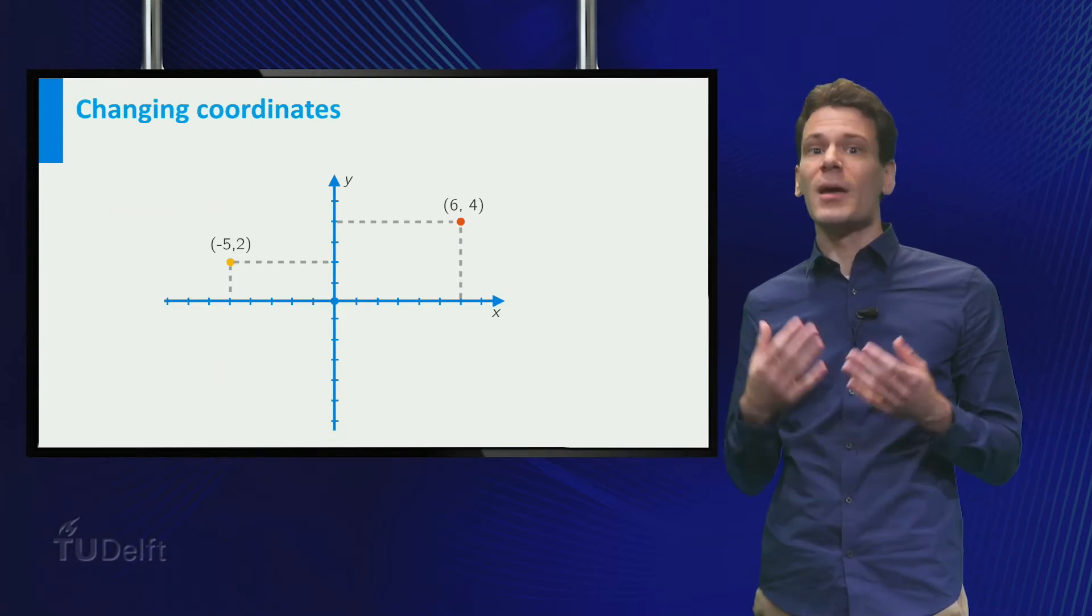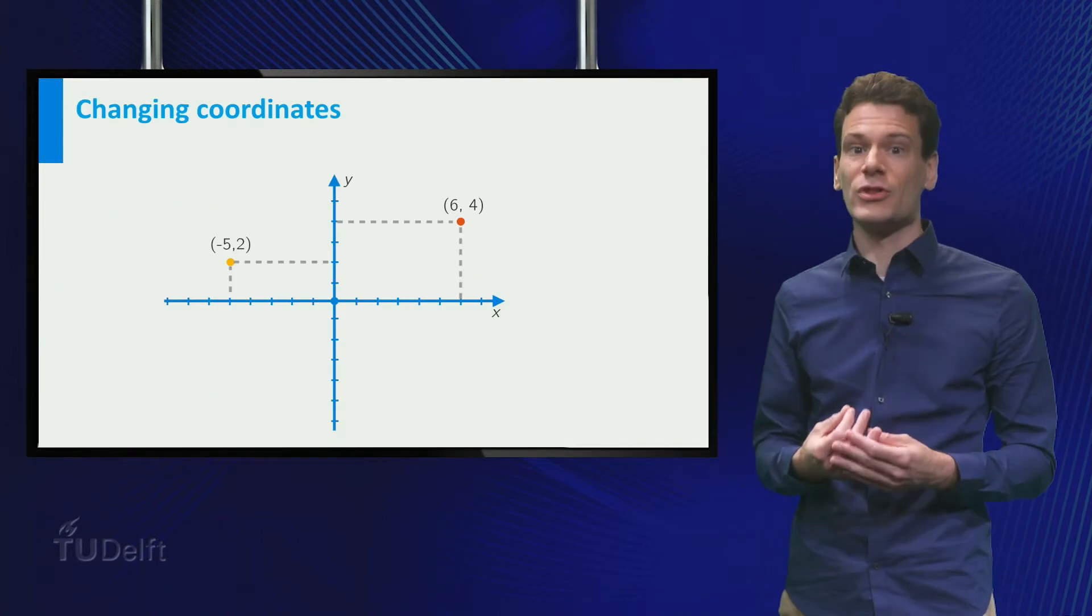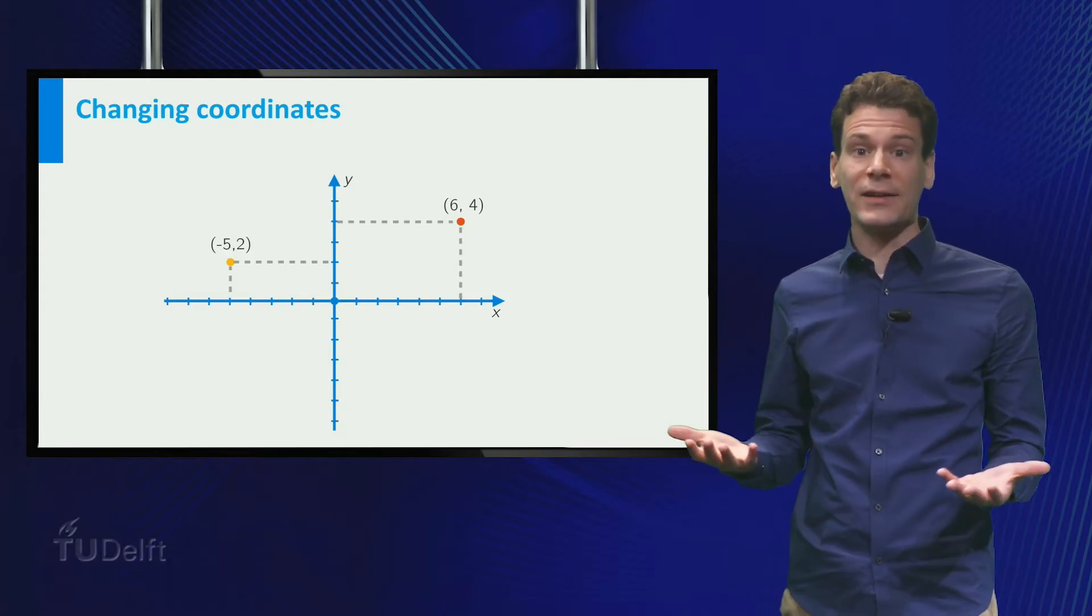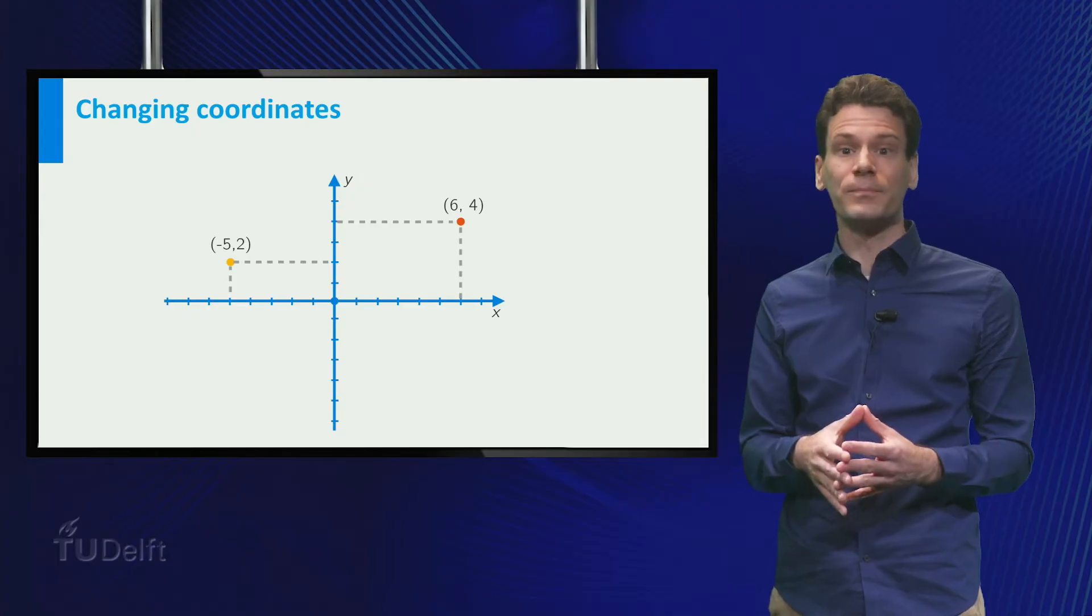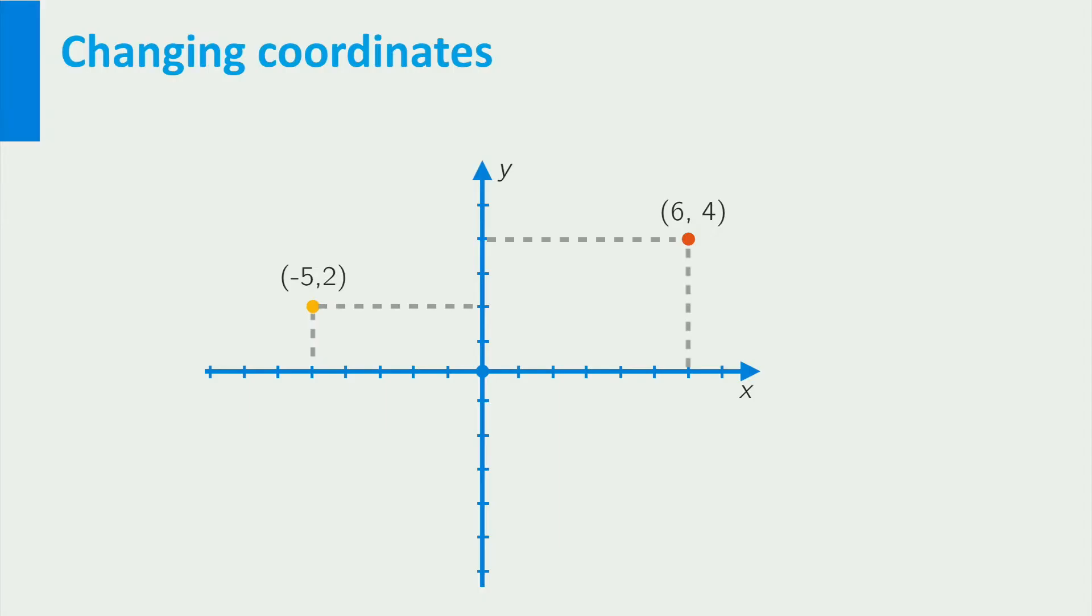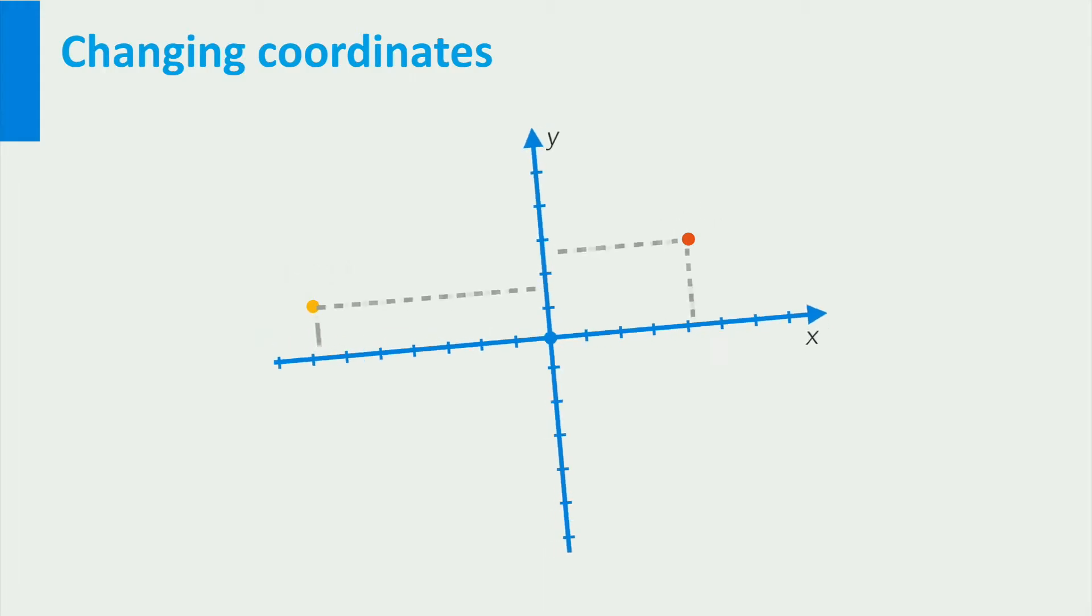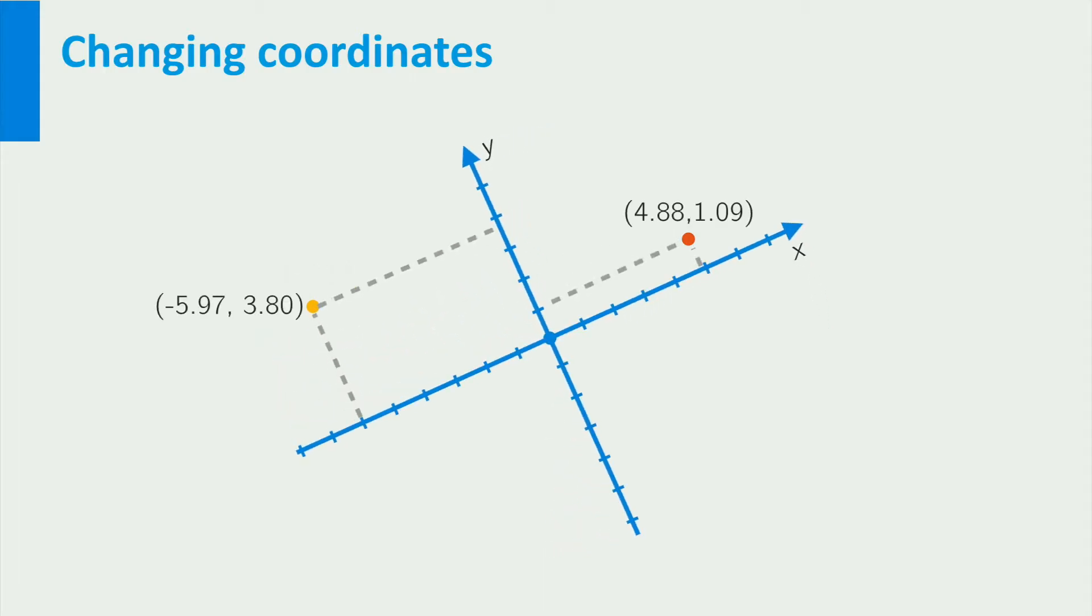If you use Cartesian coordinates, be aware that there are many choices you can make. First of all, we can choose the axes as we like, as long as they are orthogonal. This means we can change the position of the origin, and we can rotate the axes. These changes will affect the coordinates of the points.